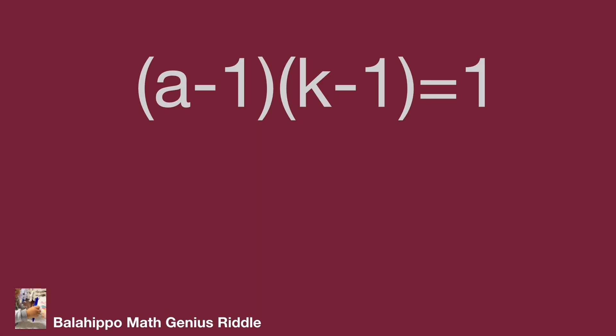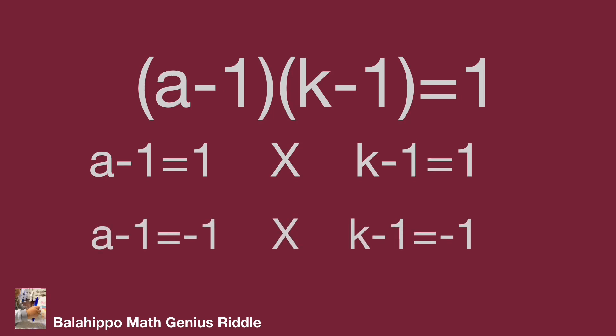A and K are integers. When two quantities multiplied become 1, then it could be A minus 1 equals 1 and K minus 1 equals 1, or A minus 1 equals minus 1 and K minus 1 equals minus 1. If A minus 1 equals minus 1, then A equals 0 and K equals 0. But A, B, C not equal to 0, so this is not the answer in this group.